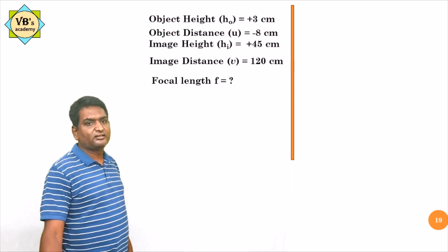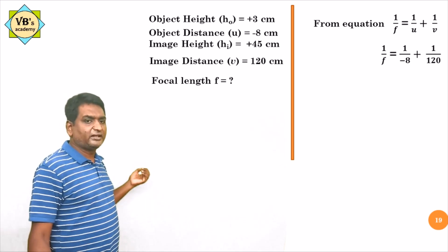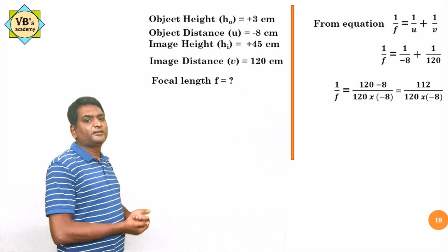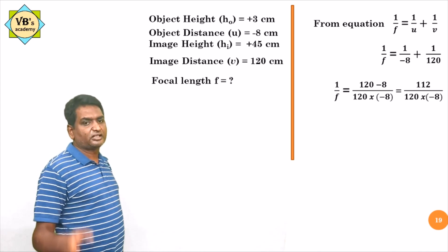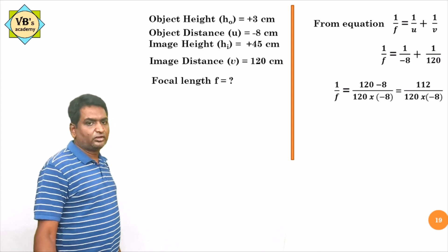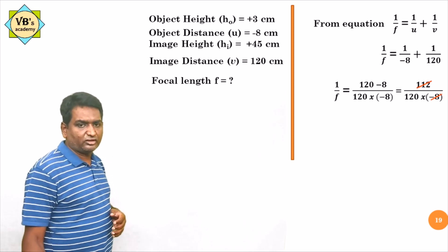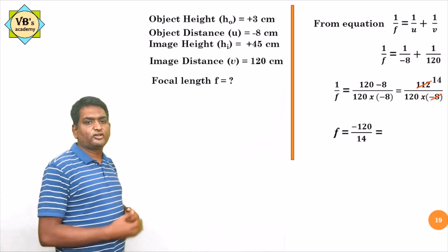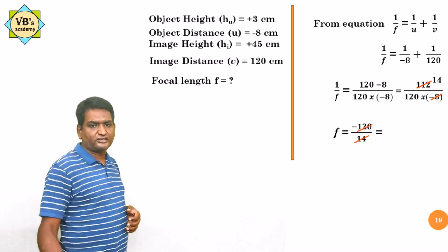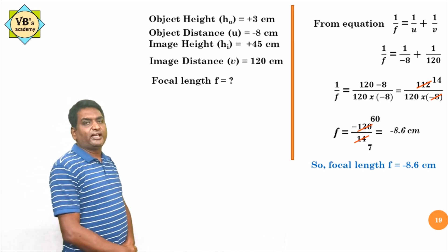Now find focal length using the mirror formula 1/F = 1/U + 1/V. Object distance is minus 8 cm, image distance is 120 cm. After substitution and cross-multiplication using LCM, you get F = minus 120/14, which equals approximately minus 8.6 centimeters. So the focal length is 8.6 centimeters.